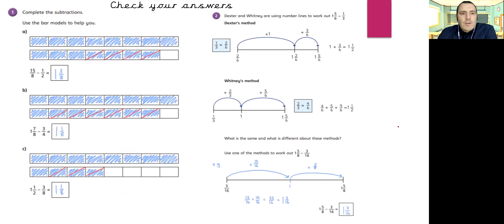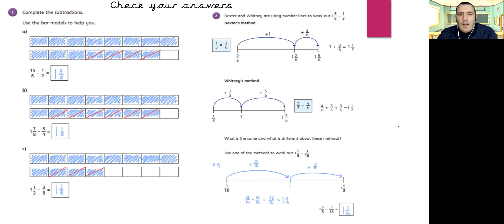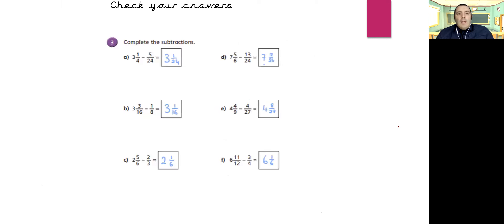Using the bar models, we've made equivalent fractions so all the bars are in eighths. We're taking away four eighths from fifteen eighths — we've crossed out four and counted the remaining, giving one full bar and three eighths. Same procedure for the others: make equivalent fractions, then subtract. For Dexter and Whitney, which method did you prefer? Note it or discuss it with someone. Then check which method you used for one and five eighths take away three sixteenths — you might have preferred your subtraction and equivalent fraction skills.